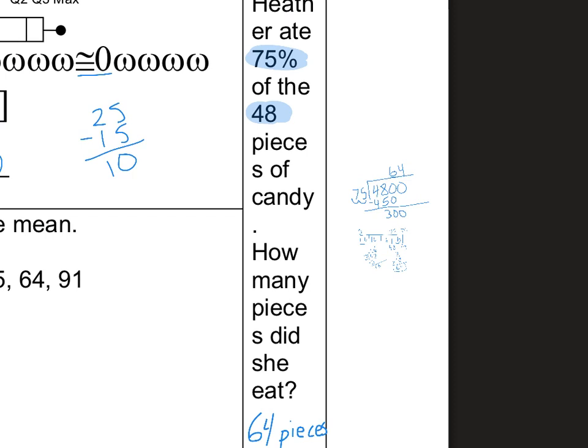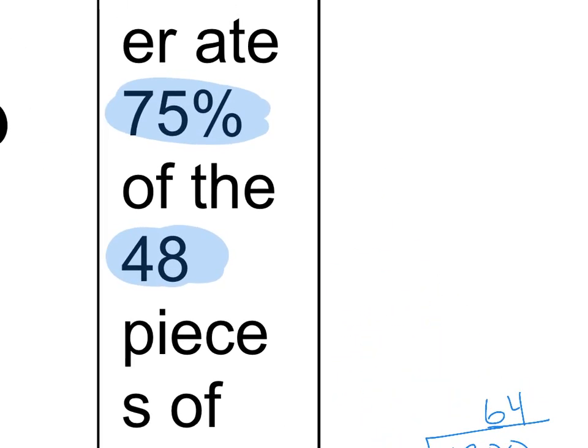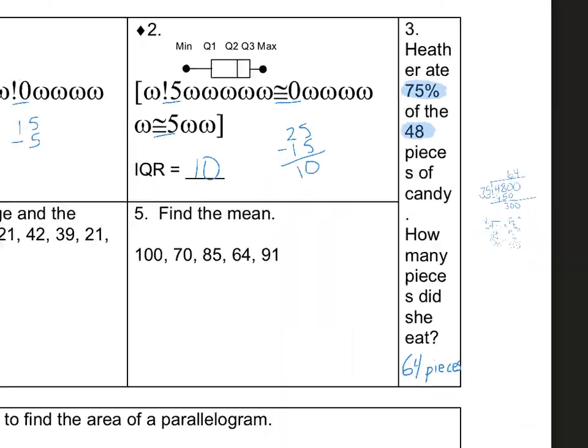You can do it however way you want, but I don't know if that makes sense. When you know you're looking for the total, so you have to get bigger, you can divide by the decimal. 48 divided by 0.75. Okay, let's move to number 4.